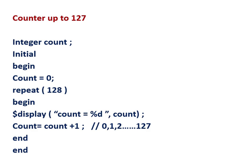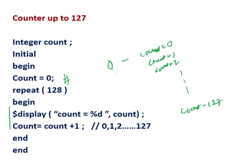This is another example — count up to 127. Here, integer count, initial begin, count equal to 0. Count is initialized to 0. Then repeat 128 — this display count, count plus 1, will be repeated for 128 times. So the first is count equal to 0, then count equal to 1, then count equal to 2, and the last one is count equal to 127. Once 128 comes, there it will be stopped and this block will be exited.